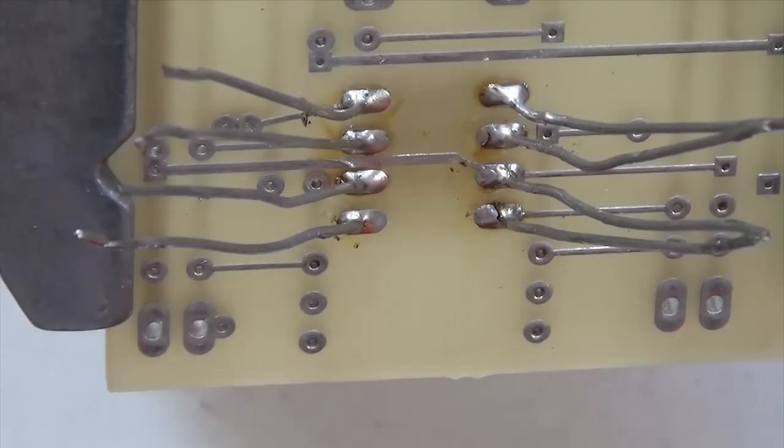So all the solder joints should look like little volcanoes. Now the brown stuff that you see on the circuit board is the flux that came from the solder. The solder joints should look like small volcanoes and not look like dog poop on the sidewalk.